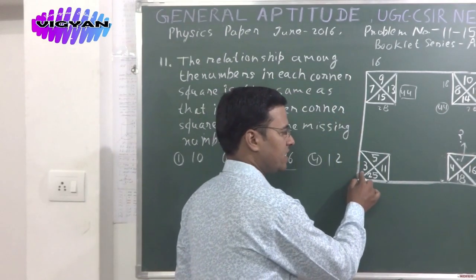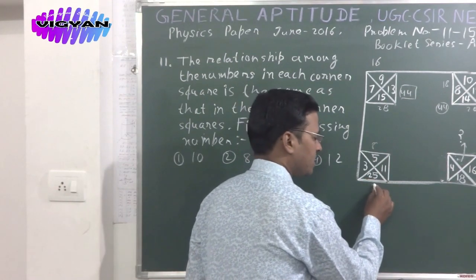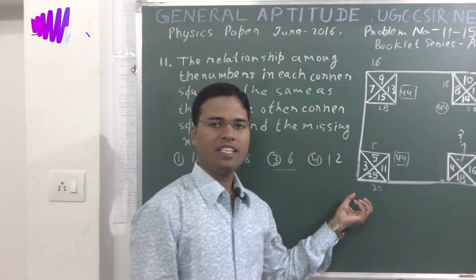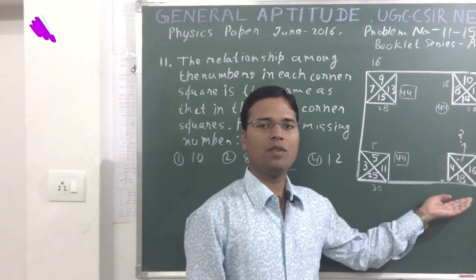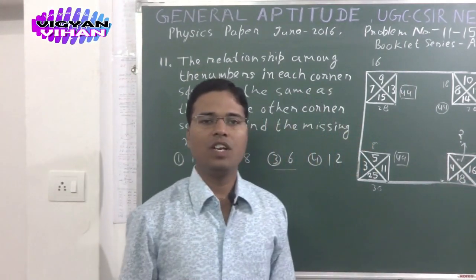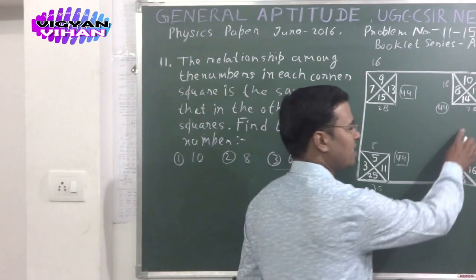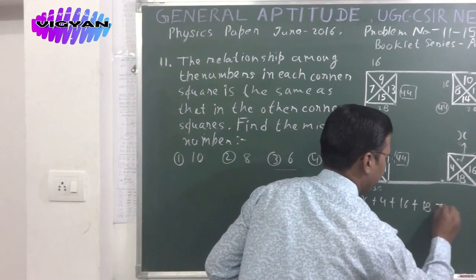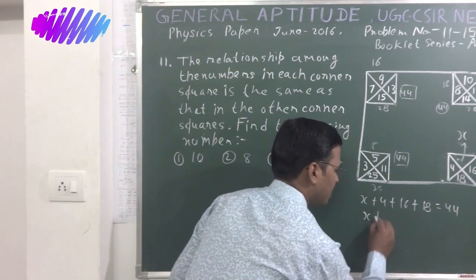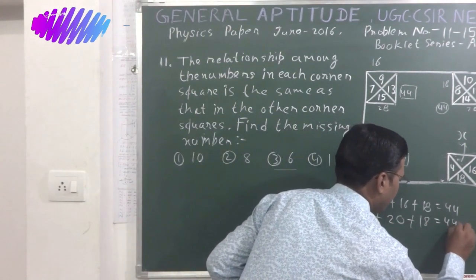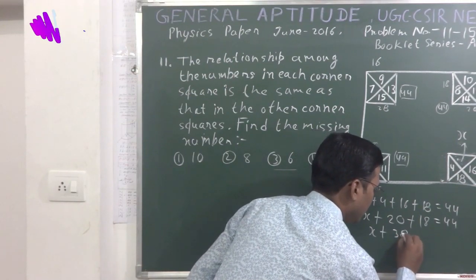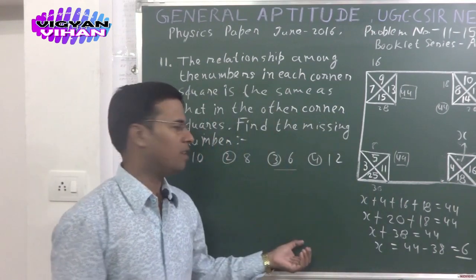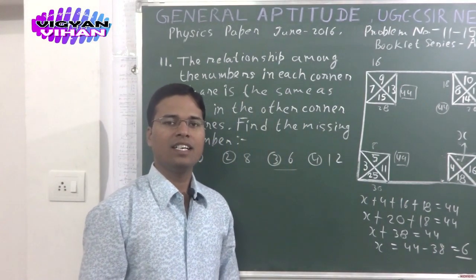For the third square: 3 plus 5 is 8, 11 plus 25 is 36, add 8 with 36 and we get 44, which is the whole sum of the numbers of this square. So the whole sum of the fourth square will also equal 44. Let the unknown number be x: x plus 4 plus 16 plus 18 equals 44. So x plus 38 equals 44, therefore x equals 6. The correct answer is option 3: 6.